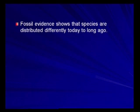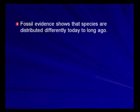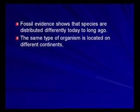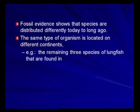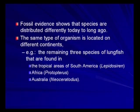Fossil evidence shows that species are distributed differently today compared to long ago, and scientists can show this scientifically through fossils. The same type of organism is located on different continents. For example, the three remaining species of lungfish are found in: South America - Lepidoceron; Africa - Protopterus; and Australia - Neoceratodes. You just need to know that as an example - lungfish are found on three different continents.